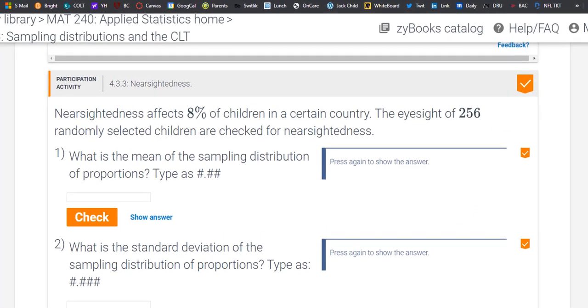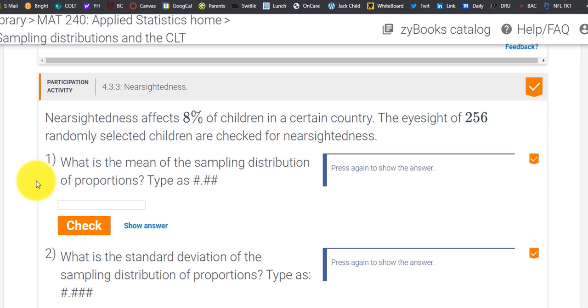Hello class. I hope this video will help with some participation activities in module 4. It says nearsightedness affects 8% of children in a certain country. The eyesight of 256 randomly selected children are checked for nearsightedness.